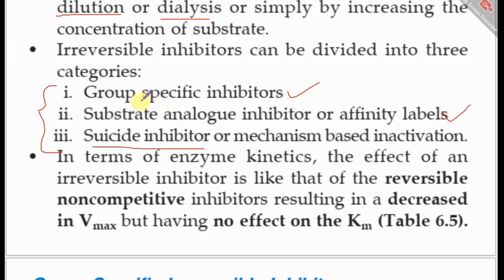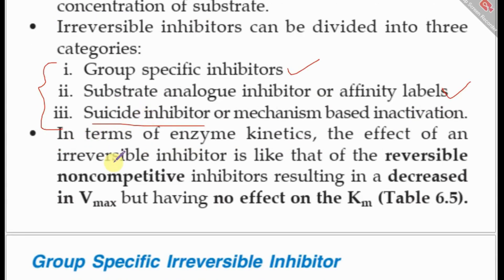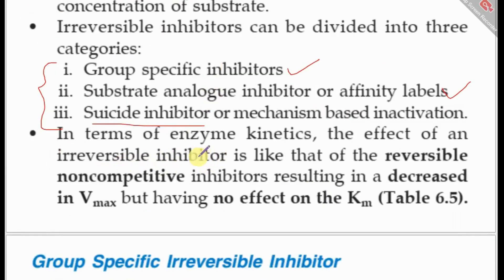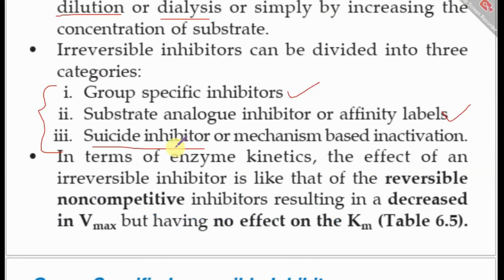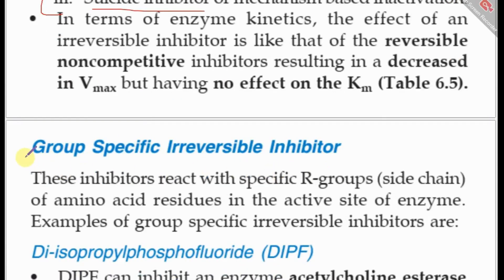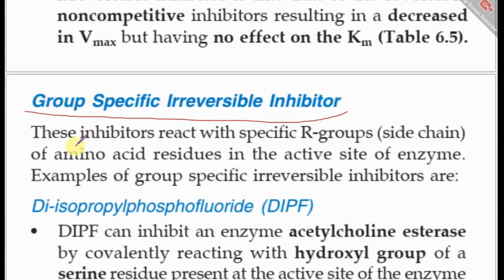Let us examine each subtype. The first is group-specific irreversible inhibitors. As the name suggests, these inhibitors react with specific R groups or side chains of amino acid residues in the active site of enzymes. Each amino acid has an R group or side chain that differentiates it from others — charged, polar uncharged, aromatic, etc. These inhibitors react with these R groups of amino acids found at the active site, resulting in inactivation of the enzyme.